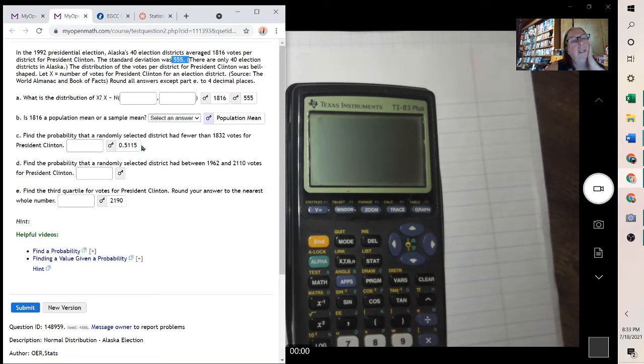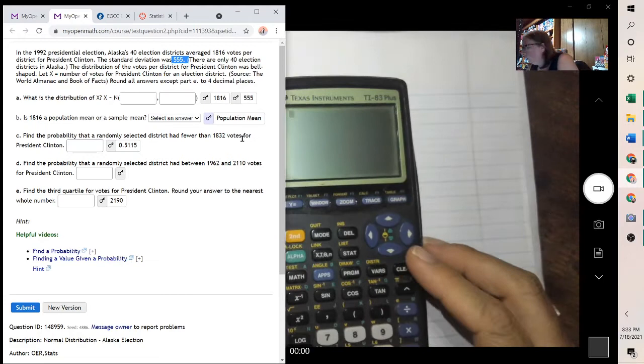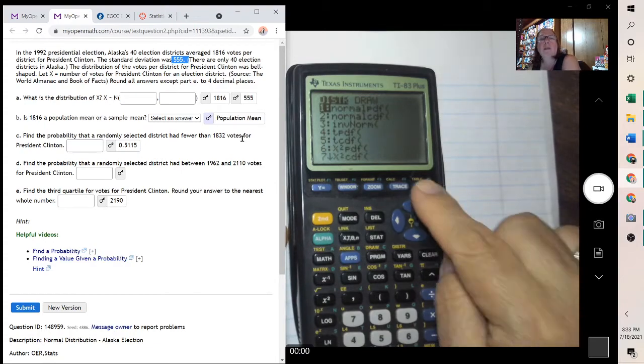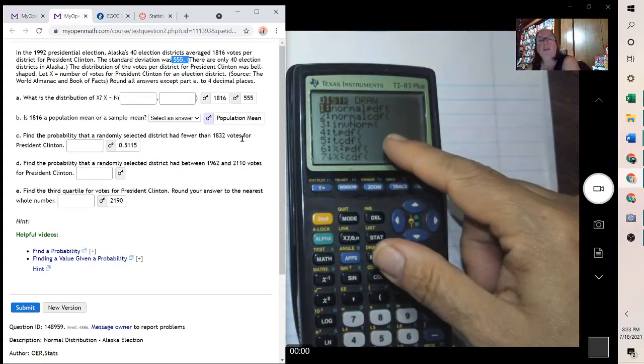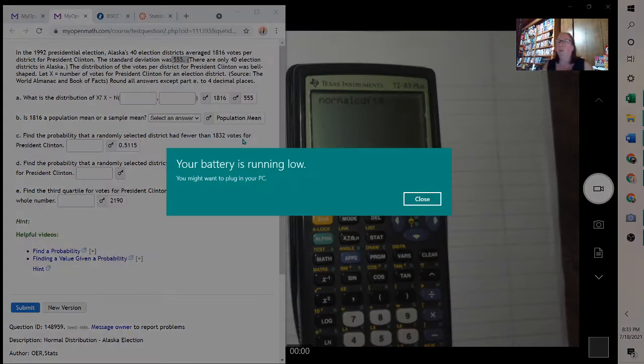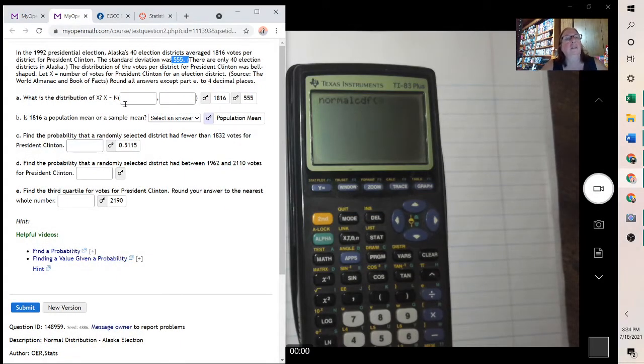Find the probability that a randomly selected district had fewer than 1,832 votes. Now when you're doing that, it's under distribution, second distribution, and it's the second one down. So when you want to find a percent, it's the second one. And then you put your lower value, because this is always looking for the lower value. So it would be 1832. So it's below 1832, you use negative 99999, a really small number, and then the 1832.